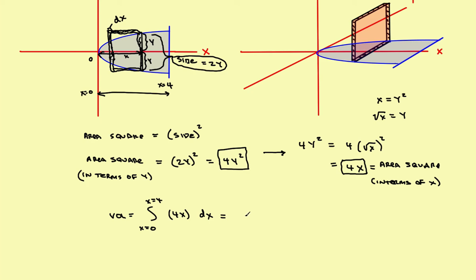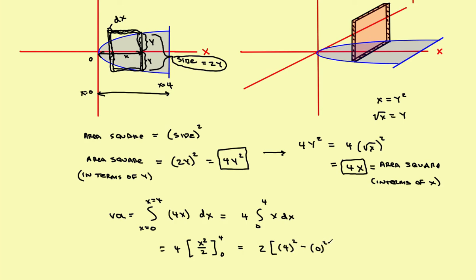This simplifies to 4 times the integral from 0 to 4 of x dx, which gives 4 times x²/2 evaluated from 0 to 4. That equals 2 times (4² minus 0²) equals 2 times 16 equals 32. The volume of the solid is 32 cubic units.